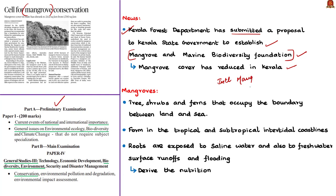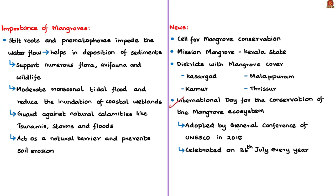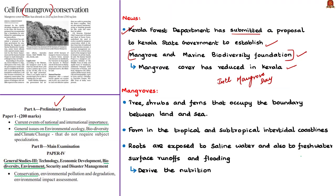The International Day for the Conservation of the Mangrove Ecosystem was adopted by the general conference of UNESCO in 2015 and is celebrated each year on 26 July. Mangroves can be trees, shrubs or ferns that occupy the boundary between the land and the sea. They form in tropical and subtropical intertidal coastlines — areas between the high tide and low tide near the coasts. The roots of mangroves are regularly exposed to saline waters, so mangroves are salt-tolerant plants.